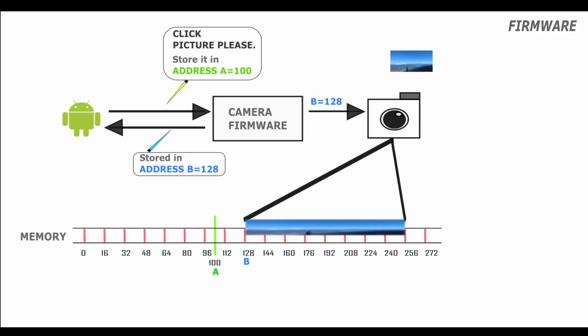In this episode we are going to look into a very important concept: memory alignment. We will take a hypothetical camera system design to understand the concept. When you open your camera application and click a picture, the camera application first sends a request to the camera firmware to turn on the camera, then sends a request to click the picture and store the image at a provided memory address A. The camera application had found free memory space starting at address A equal to 100, so it provided this address to the camera firmware.